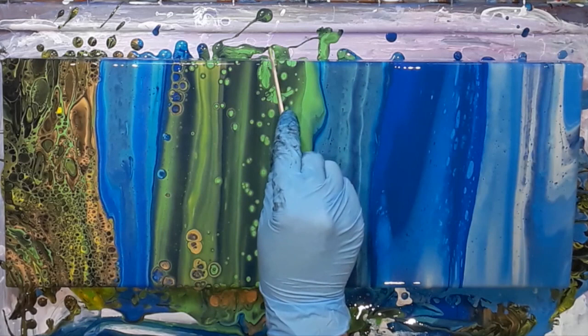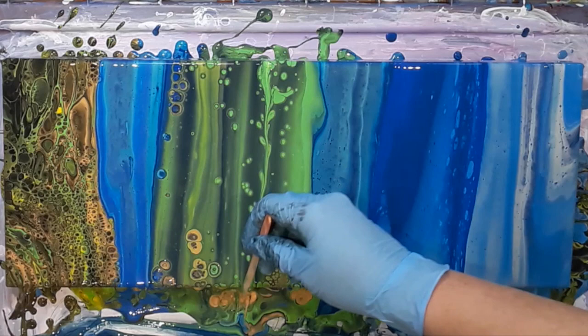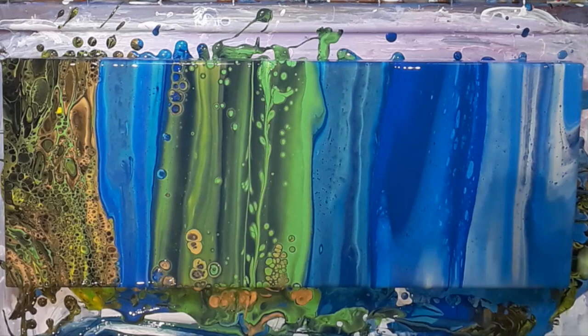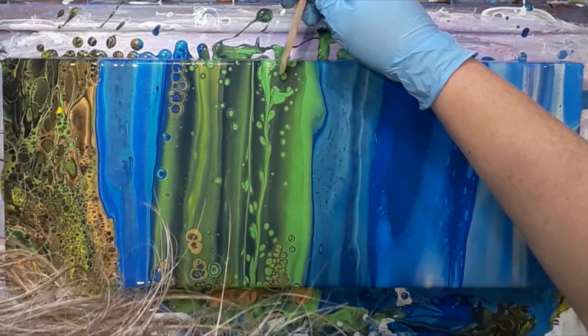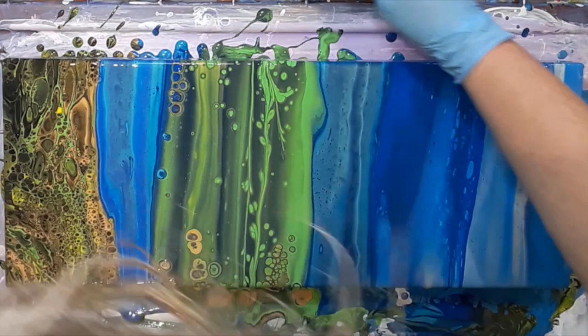This green section, I was only getting a few cells and I wasn't happy with the actual look of the piece so I decided to run a wooden stirrer on its side just to kind of collapse the cells to get rid of the round shapes. When the paint is fluid like it is, you can pretty much change the pour as much as you want to. Any marks you're going to make are going to infill because the paint is so fluid.